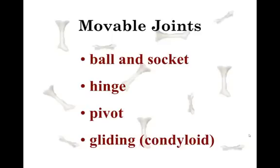The movable joints, or in some books called the freely movable joints, are the ball and socket, hinge, pivot, and gliding. Gliding is the common name; condyloid is the scientific name of the gliding joint.